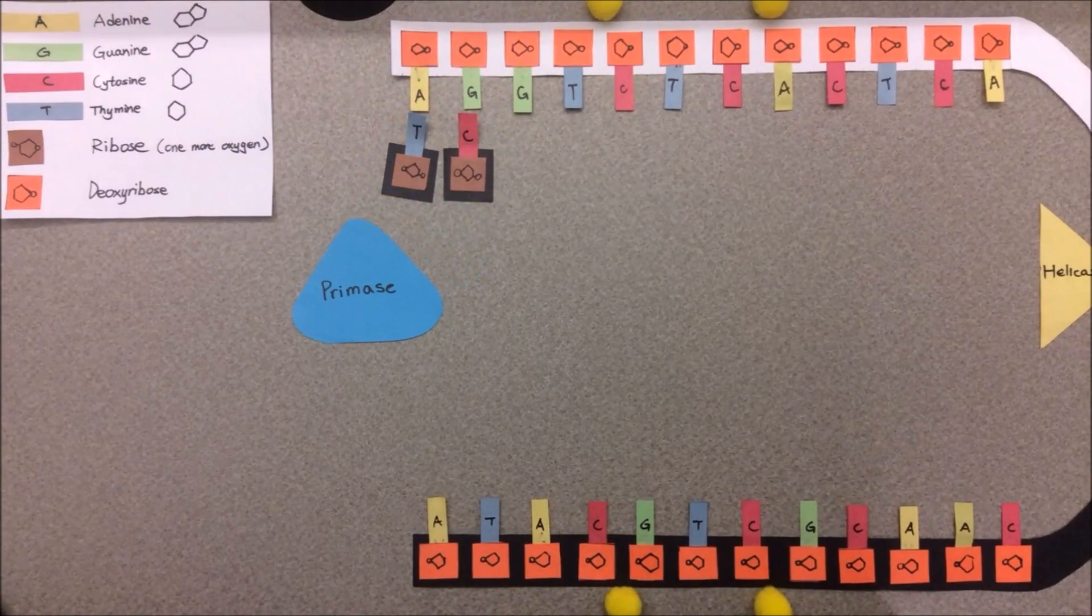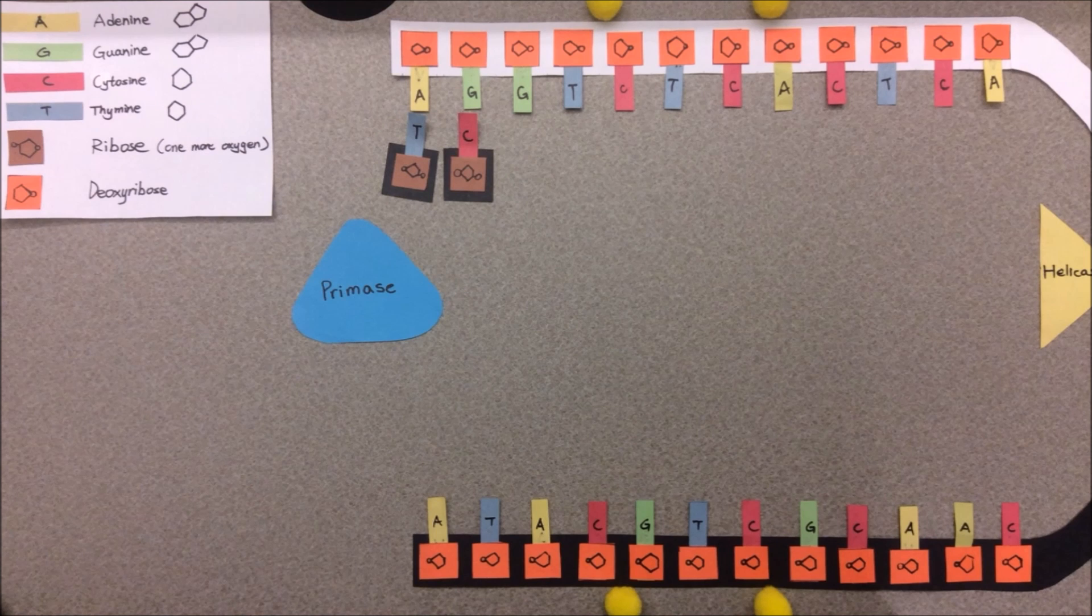For the leading strand, an enzyme called primase produces a short piece of RNA called a primer that binds to the end of the leading strand. This primer is where the start of the DNA replication for the leading strand begins.